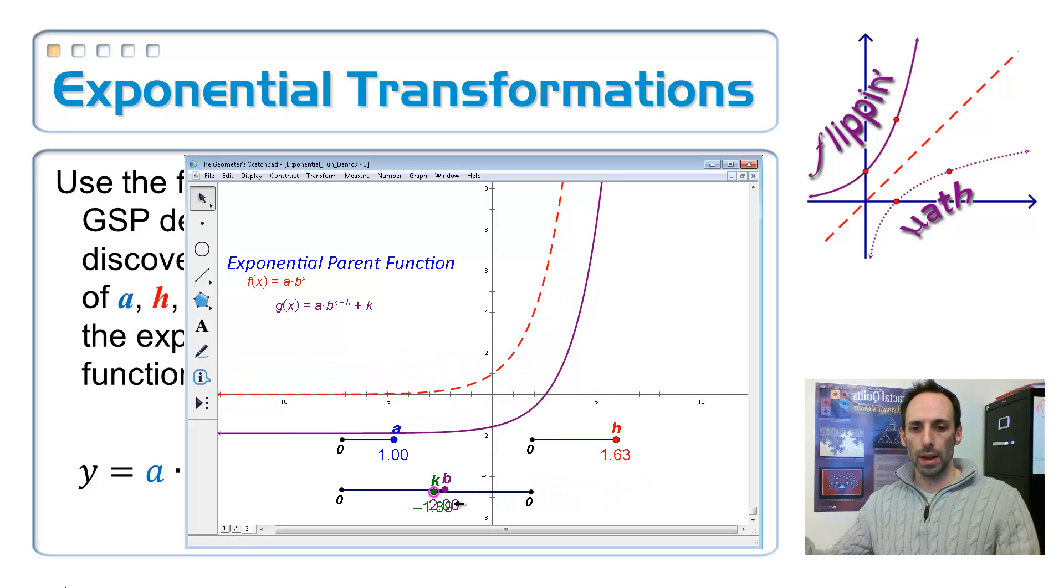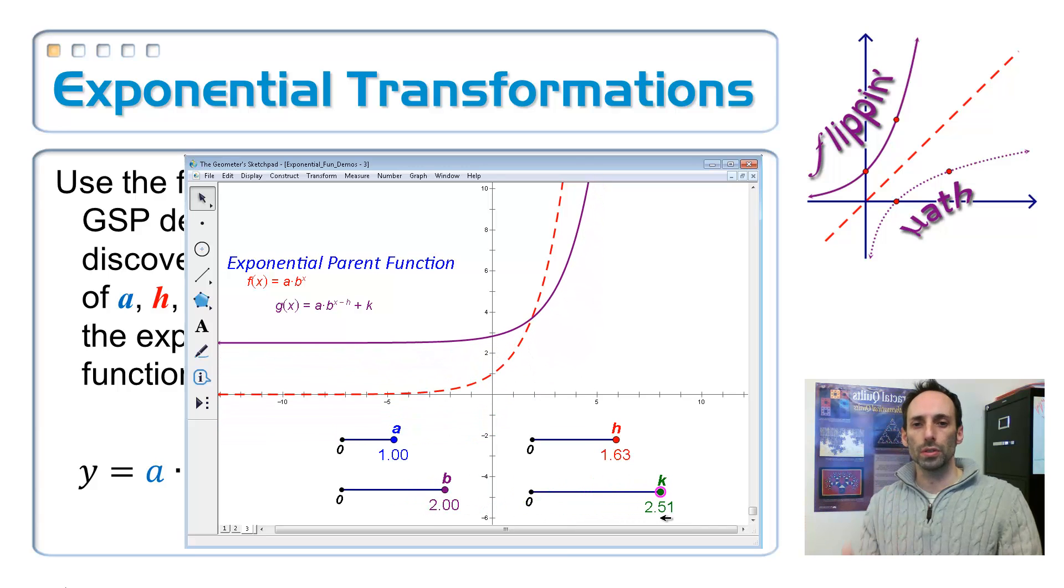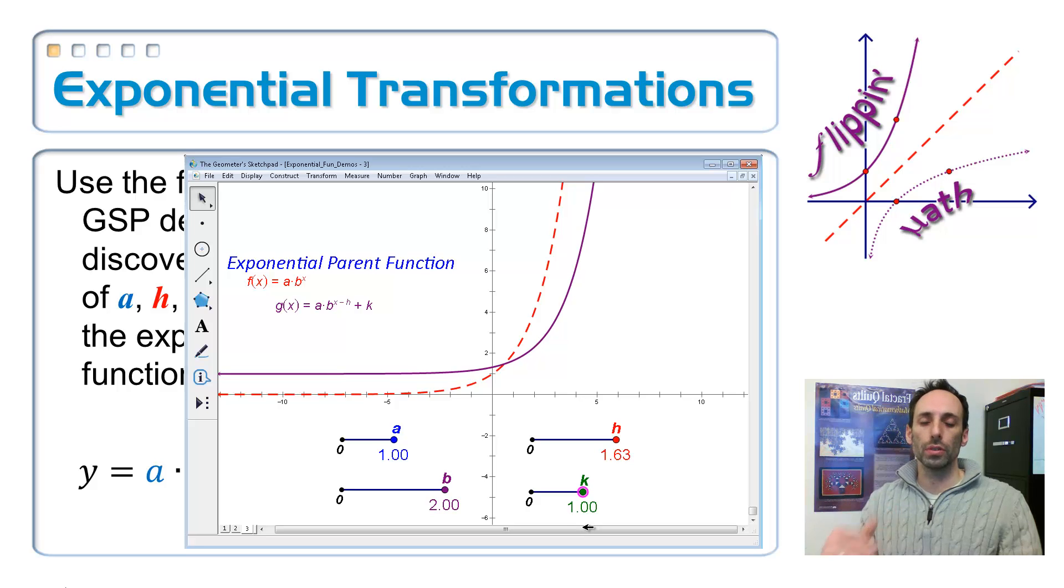Okay, so now let me try the K. The K is moving this thing up and down. So notice whenever I move it up and down, that's going to affect where that horizontal asymptote is. It used to be at, say, the X axis. And if I move it up here to, say, 1, now horizontal asymptote's at 1.